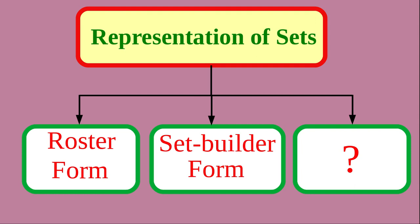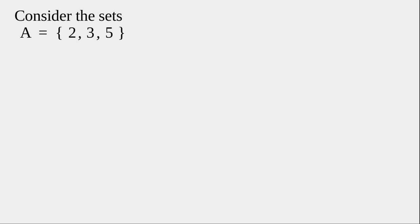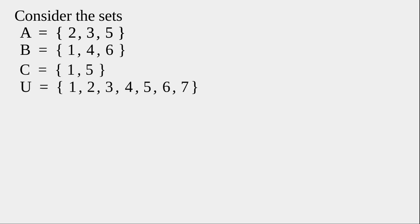We use this method when we want to represent a number of sets at the same time. Using an example, we have sets: A = {2, 3, 5}, B = {1, 4, 6}, C = {1, 5}, and the universal set U = {1, 2, 3, 4, 5, 6, 7}. We want to represent all four sets using a diagram.